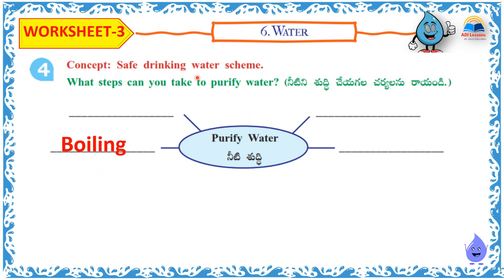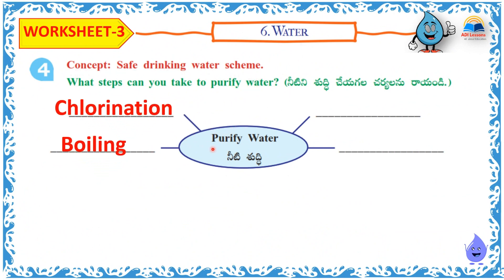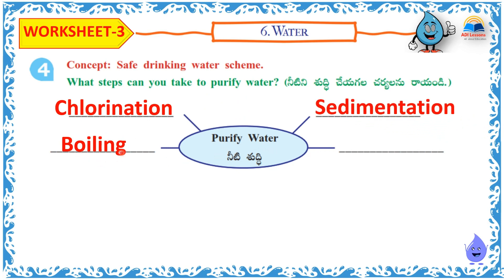Safe drinking water scheme involves steps to purify water: boiling, chlorination, sedimentation, filtration.